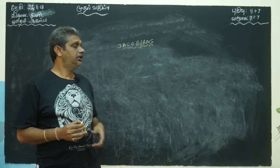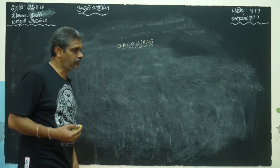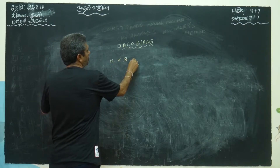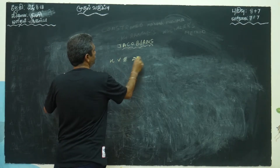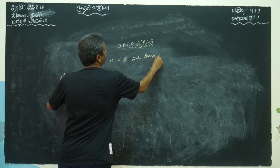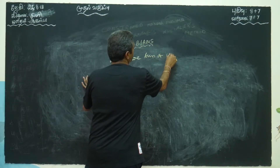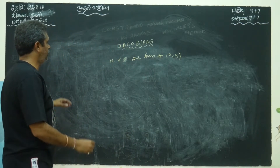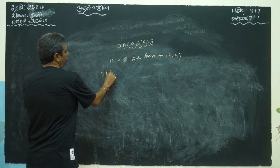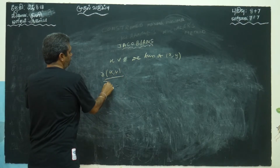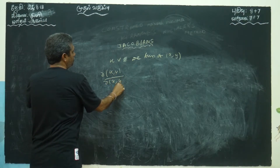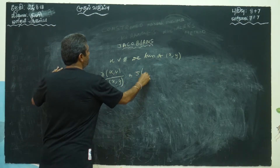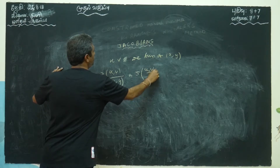Jacobians means: they will give two functions or more than two functions. If u and v are functions of x and y, then the Jacobian is written as ∂(u,v)/∂(x,y), or J of (u,v)/(x,y).